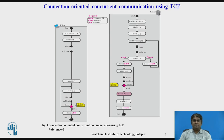After the accept function is unblocked, the server knows that the client needs its service. To provide concurrency, the server process calls the fork function. This function creates a new process called the child process, which is exactly the same as the parent process. After calling the fork function, the two processes run concurrently but each can do different things. Each process now has two sockets: the listen socket and the connect socket.